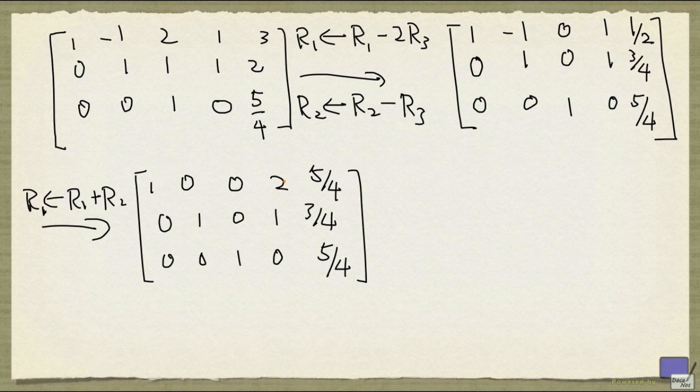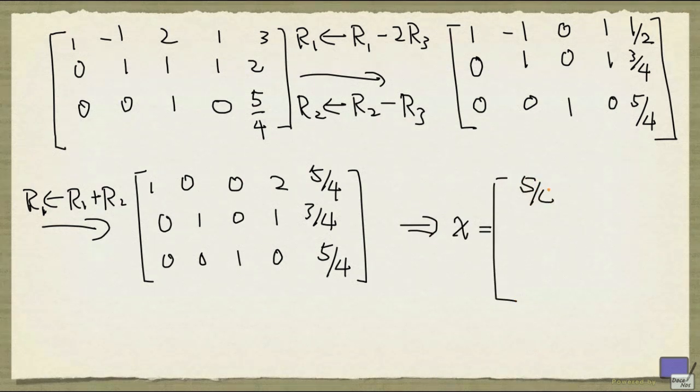There's no 0 row in the left hand side. So we can obtain a solution by setting x4 to 0, and that gives x equal 5 over 4, 3 over 4, 5 over 4, and 0. And you can easily check that this is indeed the solution, and there are many more.